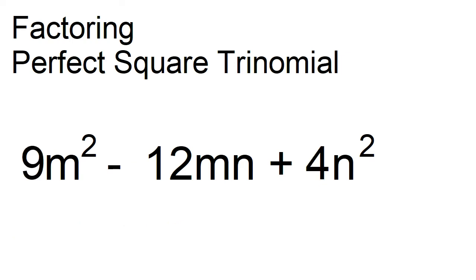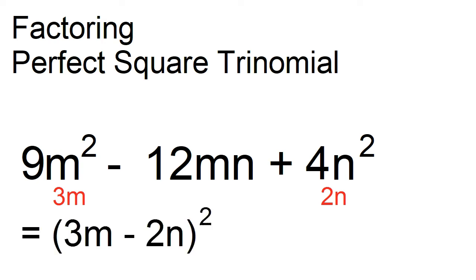Factor 9m squared minus 12mn plus 4n squared. Note that the middle term has a minus sign — just copy the sign when you factor. The positive square root of 9m squared is 3m, and the positive square root of 4n squared is 2n. Therefore, 9m squared minus 12mn plus 4n squared equals the square of the quantity 3m minus 2n.